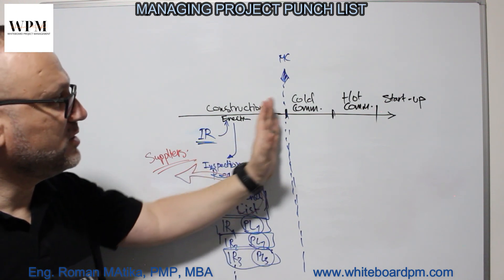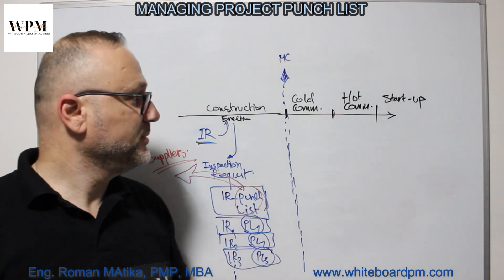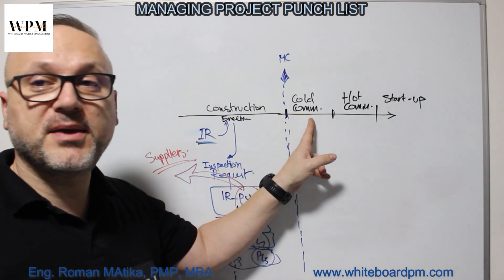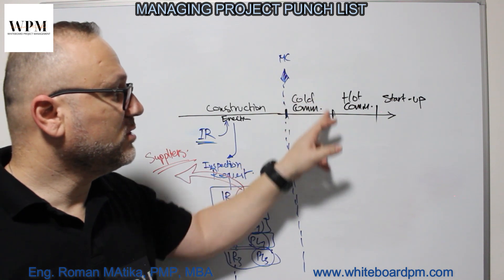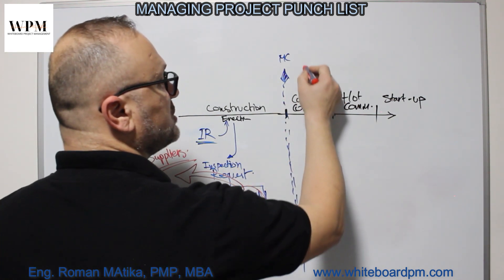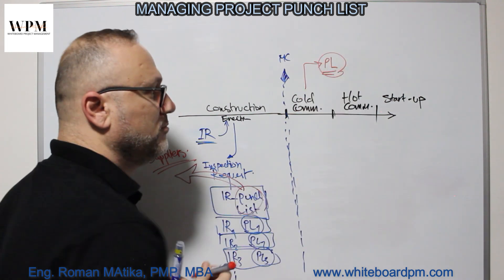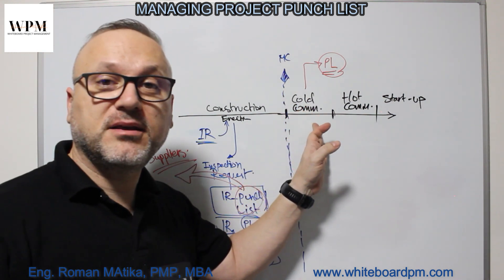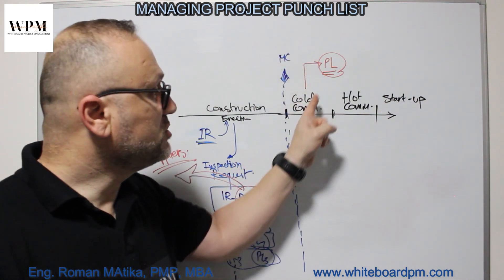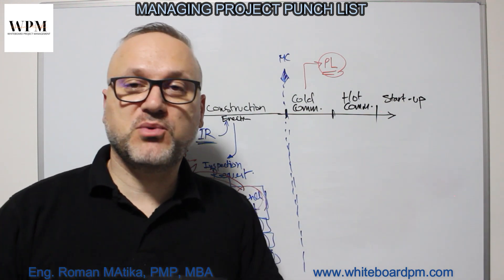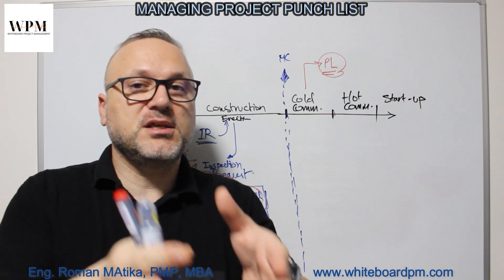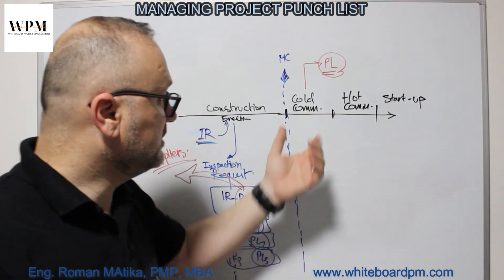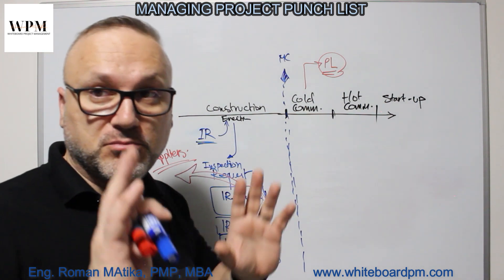Punch lists must be completed until mechanical completion. Once we go to individual testing of each equipment or material, we are in the cold commissioning stage and we also have some punch lists here — mostly for the suppliers. Because we are inspecting the equipment and calling the suppliers to come to site, to inspect the equipment and make sure it is installed according to the manuals, specifications, and project documents. Those are mostly the punch lists for the suppliers, but not all.